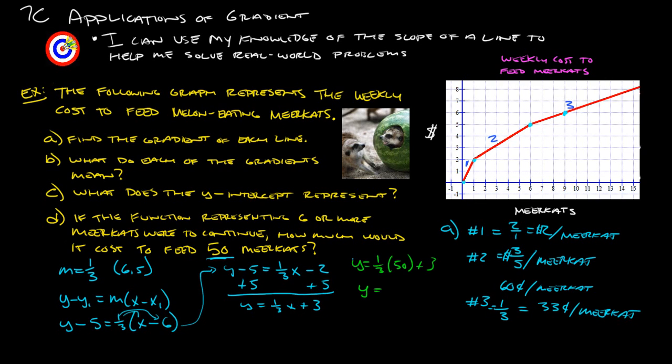Okay, so one-third of 50. Calculate that out. 50 divided by 3 gives us 16.67. And then we add 3 to that, and we get that y equals 19.67. So if you want to own 50 meerkats, it would cost you about 20 bucks to feed them every week. I really hope you don't want to own 50 meerkats. That would be a lot.